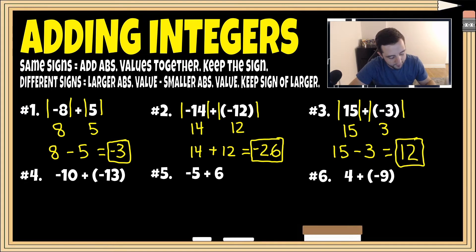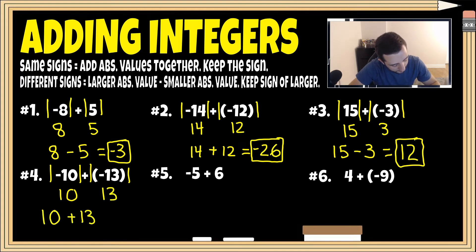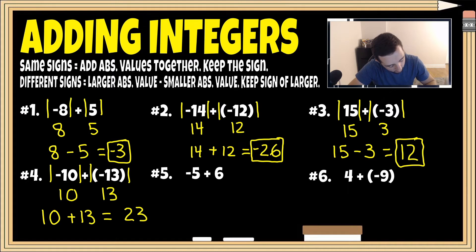For number four, we have the same signs — both negative. The absolute value of negative 10 is positive 10, and the absolute value of negative 13 is positive 13. We add those together: 10 plus 13 is 23. We keep the sign of the original numbers — they were both negative — so our final answer is negative 23.